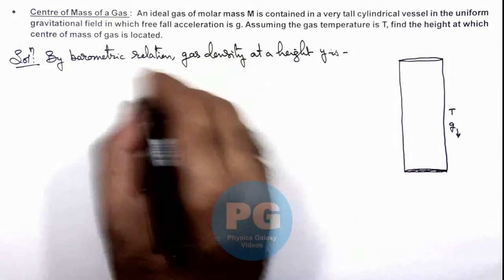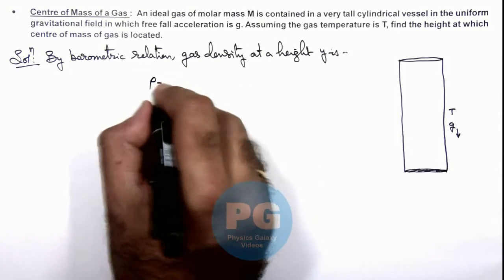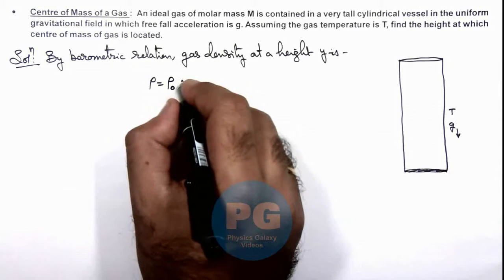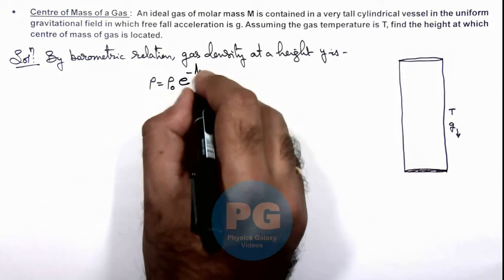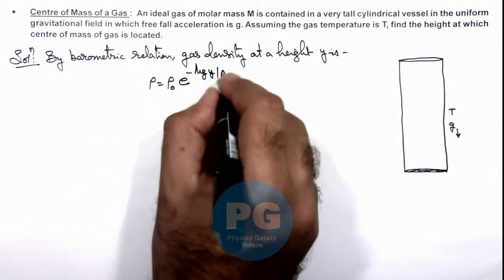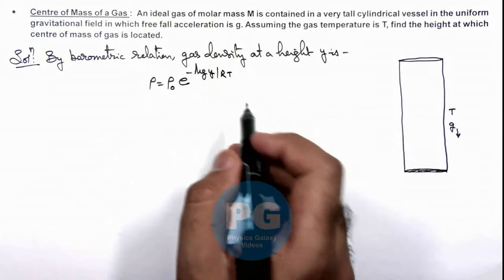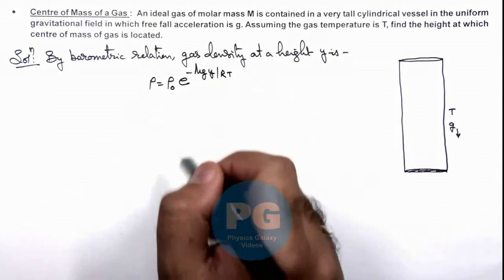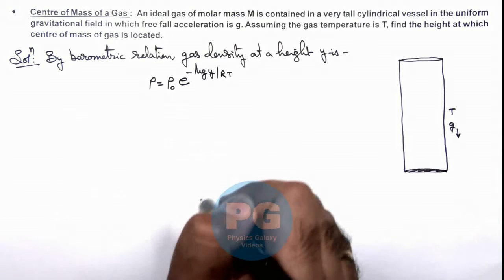This gas density we can write as ρ = ρ₀ e^(-Mgy/RT). This we have already studied in concept videos as well as in some earlier instruction.